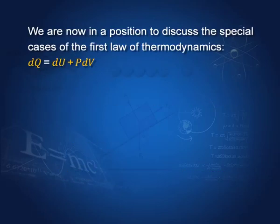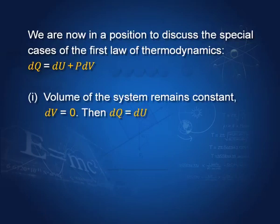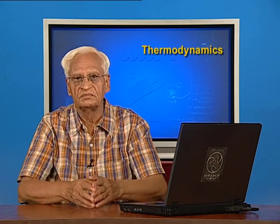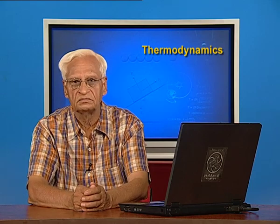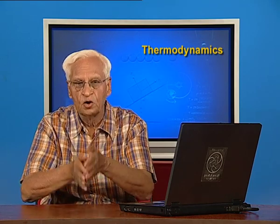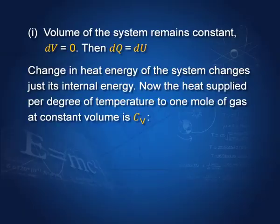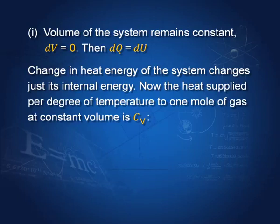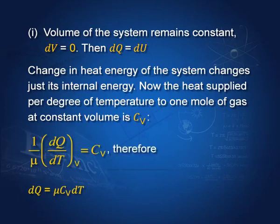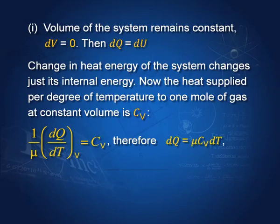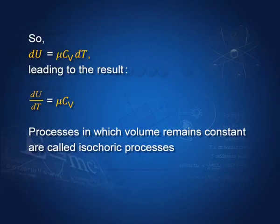We now discuss special cases. First, if volume remains constant (isochoric process), then p·dV = 0, so dQ = dU. Whatever heat is given to the system is used entirely in increasing the internal energy. From the definition of specific heat at constant volume, dQ = μ·Cv·dT, where Cv is the molar specific heat at constant volume. Therefore dU = μ·Cv·dT, and dU/dT = μ·Cv — a result we shall use later.